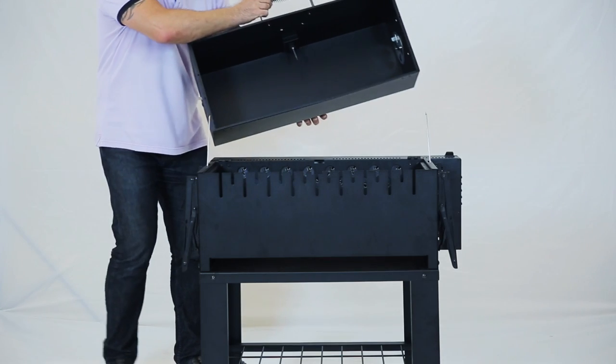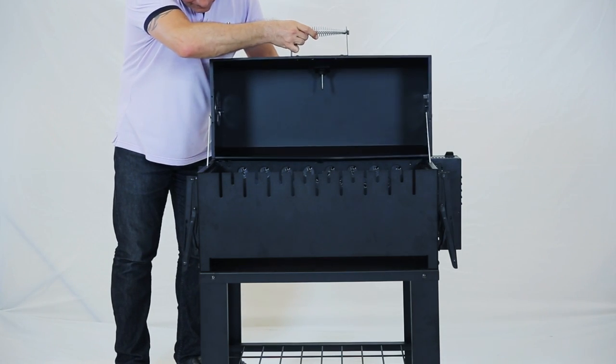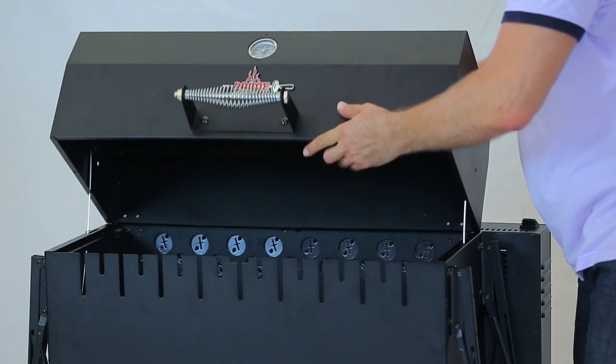Step 14. Insert the lid hanger to the right and left hole, as you can see here, and close it carefully.